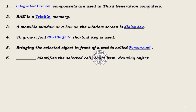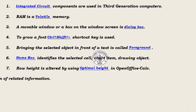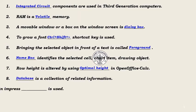Question 6: Dash identifies the selected cell, chart item, or drawing object. Answer: Name box. Question 7: Row height is altered by using dash in OpenOffice Calc. Answer: Optimal height. Question 8: Dash is a collection of related information. Answer: Database.